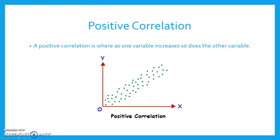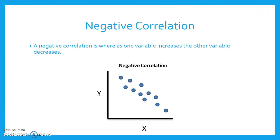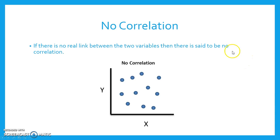This is what a positive correlation looks like. As one variable increases, so does the other variable. For a negative correlation, as one variable increases, the other variable decreases, and this is shown on this graph here. When there is no correlation, there is no real link between the two variables, and this is shown by that graph here.